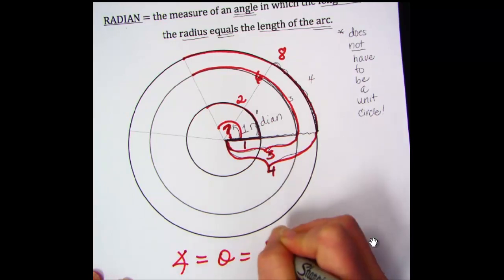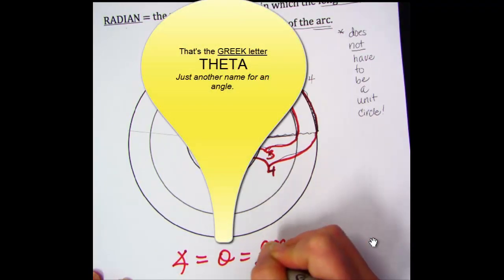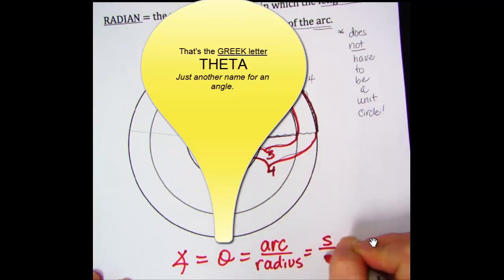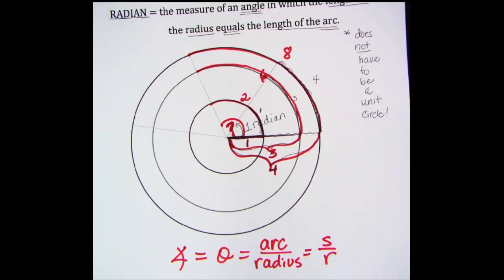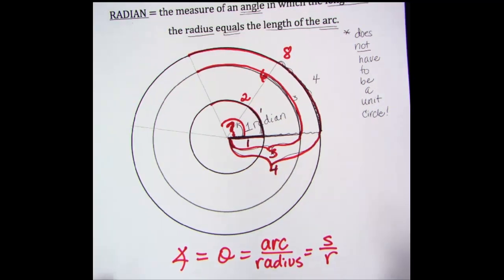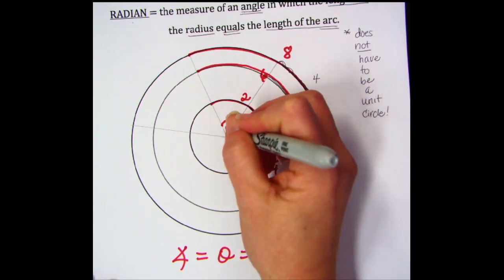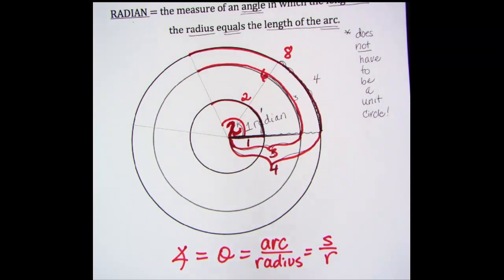We have a formula that says the measure of any angle equals the arc length over the radius length, or s over r. Think about that. In each of these angles, the arc length is twice as big as the radius length. There are two radius lengths for each arc length, which means the measure of that angle is two radians.